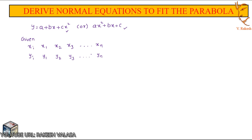If these values are given in the problem, let the residual value ri equal to the difference between yi minus y, where y is the parabolic equation, that is a plus bx plus cx square.